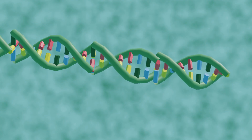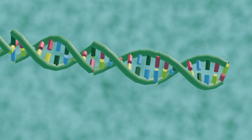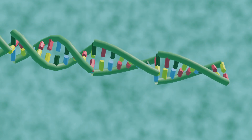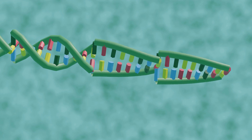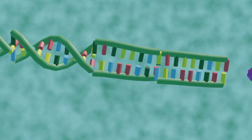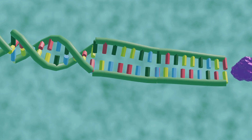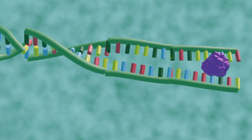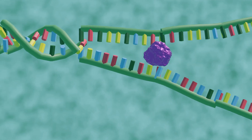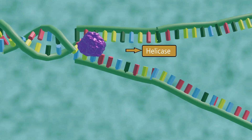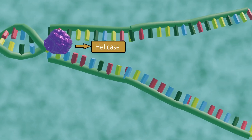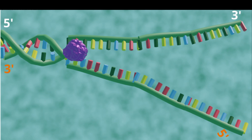Replication begins with the spotting of the origin of replication, followed by the unwinding of the two DNA strands. Unzipping of DNA strands requires high-energy input, hence it is catalyzed by the enzyme helicase. The separation of the two single strands of DNA creates a shape called a replication fork.